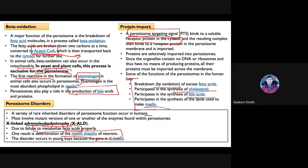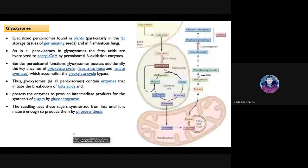X-linked adrenal leukodystrophy is an X-linked disease, so it does not mean that girls are unaffected, but for females the homozygous recessive condition must occur for the disease to manifest. In heterozygous females, the disease will not progress. However, in males there is only one X chromosome, so the disease is common in young boys.